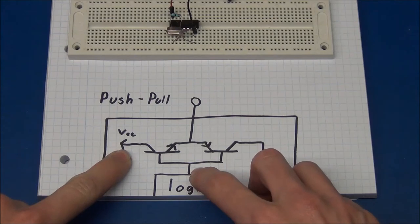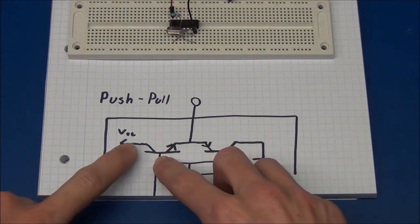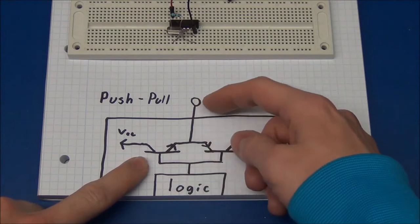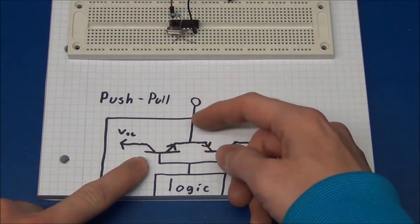So with this, when the output is high, then this transistor will be turned on, and there will be a current coming out of the chip.